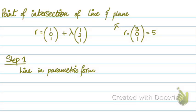All right, so how do you find a point of intersection of a line and plane? Three very simple steps.